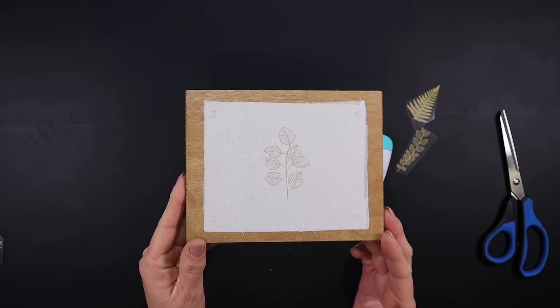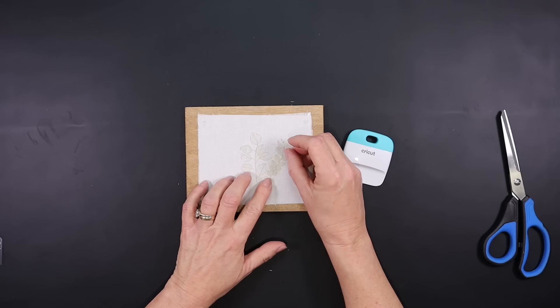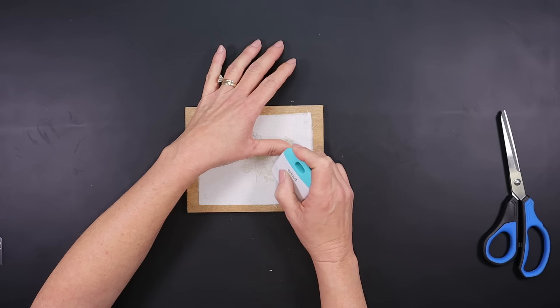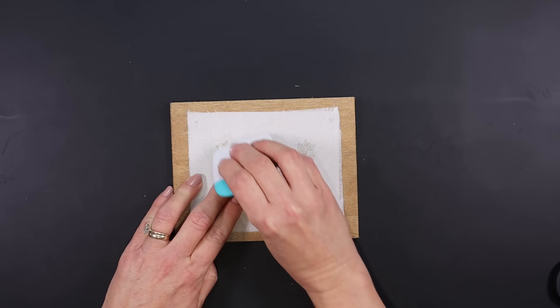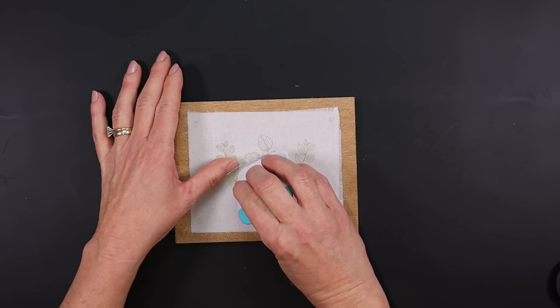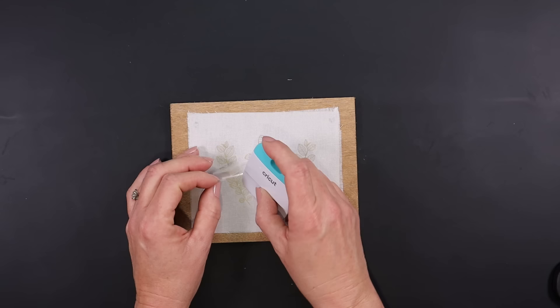So I'm going to add the other two leaf pieces that I chose for this design, and once you have those in place, you may want to go over it with a very thin layer of Mod Podge just to protect those rub-on transfers from coming off. But I am very impressed with the detail and how well these adhere to the fabric.